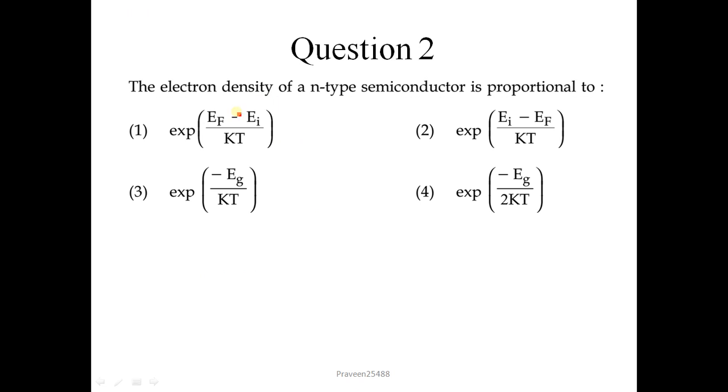Question number 2: The electron density of N type semiconductor is proportional to. The direct formula is proportional to exponential of EF minus EI upon KT. So correct option is 1.